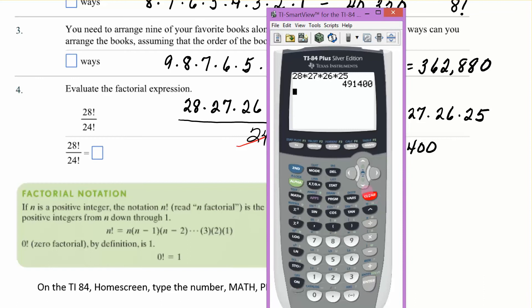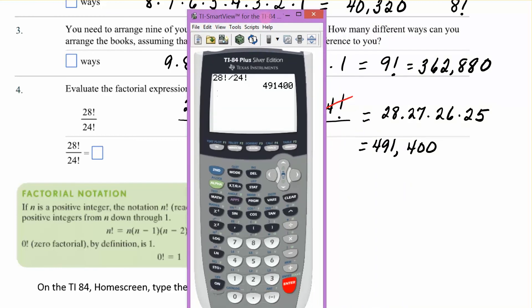Now, that is a very nice shortcut. But I want to show you something that could actually be faster if you wanted it to be. All right, if I clear that off. If I take 28 math, to probability. This is 28 factorial divided by 24 factorial. And I get the same answer.